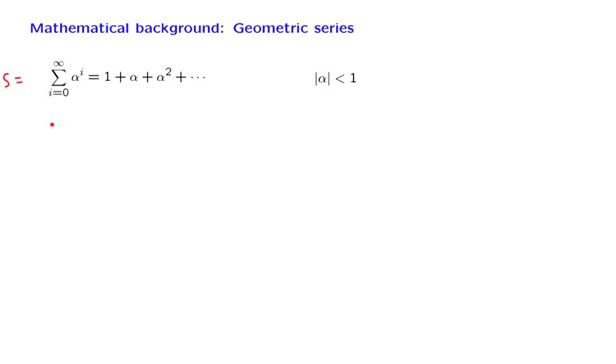One way of evaluating this series is to start from an algebraic identity, namely the following. Let us take 1 minus alpha and multiply it by the terms in the series, but going only up to the term alpha to the n. So it's a finite series.